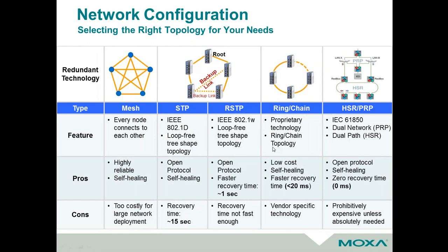For most industrial networks, you're likely to choose a topology that supports some type of redundancy, which will allow the network to recover and keep operating if you lose a network link or an individual device. Here are four common topologies worth considering. The first is a mesh, where every network device is connected to at least two other devices, so you've got an individual backup path to each device. It is highly reliable and self-healing, but in many cases it's too costly because of the amount of wire you've got to run to connect each device to every other.